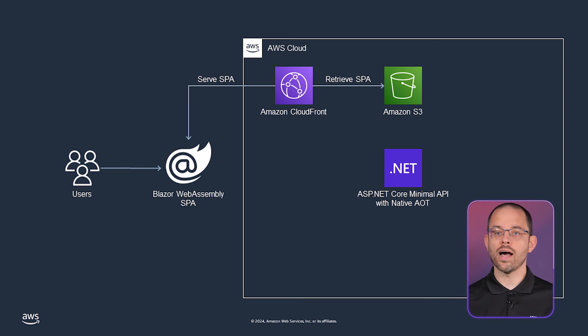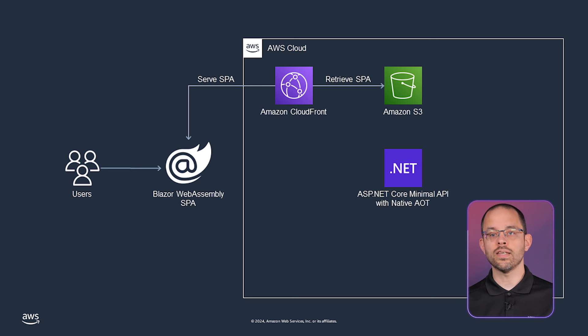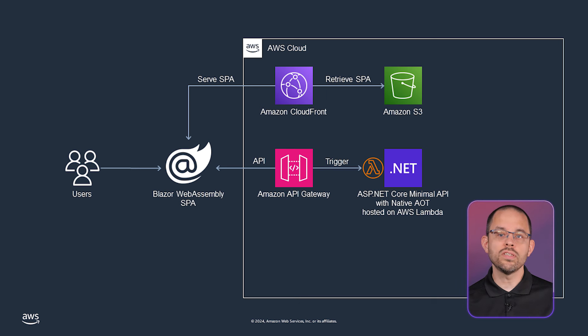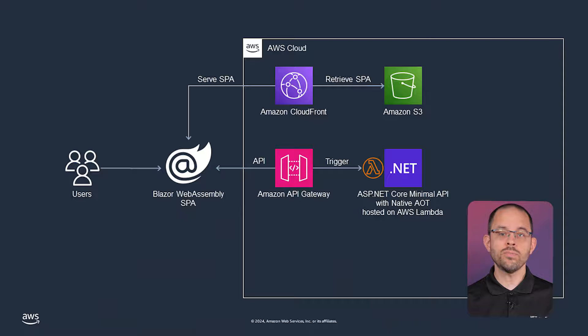For your backend, as you're building an ASP.NET Core minimal API with native ahead-of-time compilation, you can deploy it on AWS Lambda and serve it through API Gateway. The native AOT compilation reduces the cold start to the bare minimum. As your ASP.NET Core minimal API is turned into a binary, you don't get the cold start penalty for bootstrapping the .NET runtime and compiling just-in-time your intermediate language code.